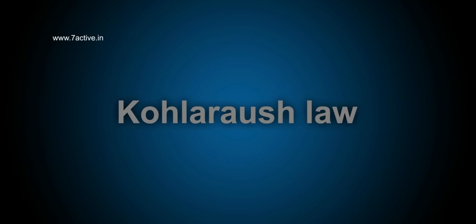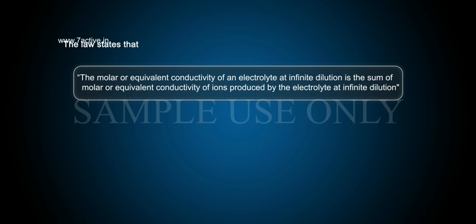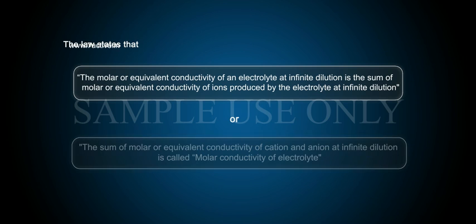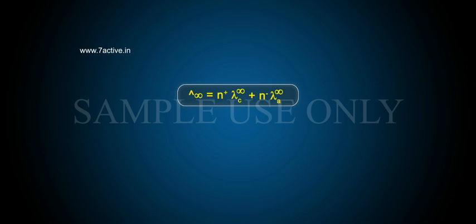Kohlrausch's Law states that the molar or equivalent conductivity of an electrolyte at infinite dilution is the sum of molar or equivalent conductivity of ions produced by the electrolyte at infinite dilution, or the sum of molar or equivalent conductivity of cation and anion at infinite dilution. The formula is: Λ∞ = n⁺λ_c∞ + n⁻λ_a∞.